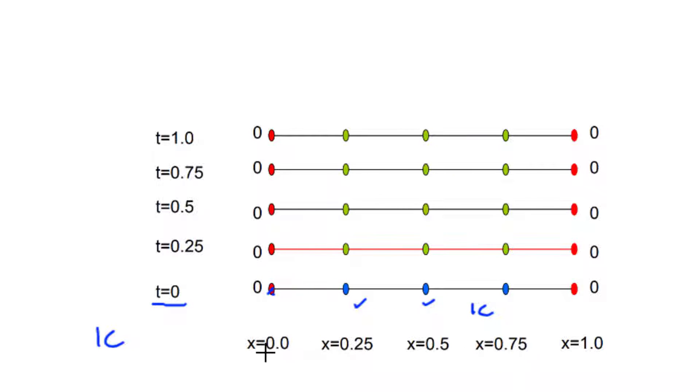For positions at the extreme values, so x equal to 0 and let's say x equal to 1, the values are known as well and these are called boundary conditions. These are the red values you see here.